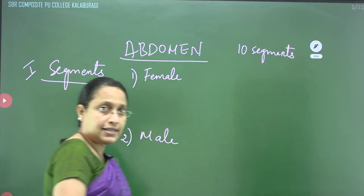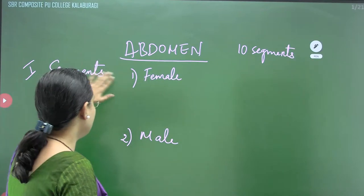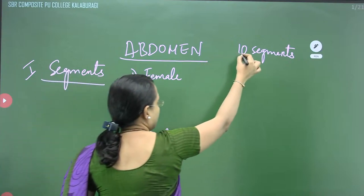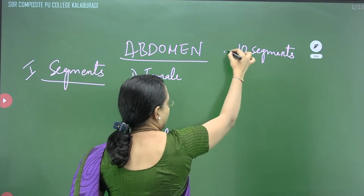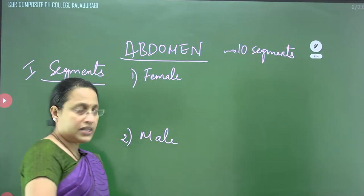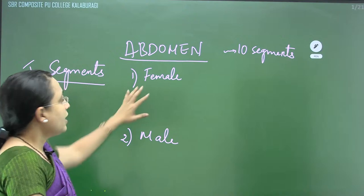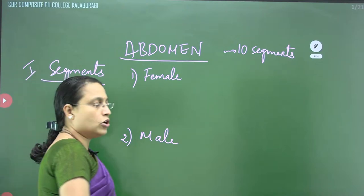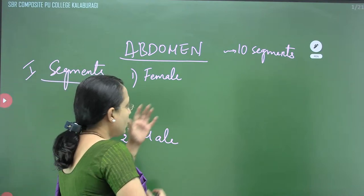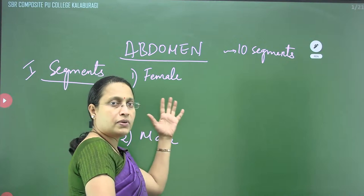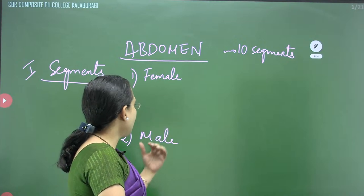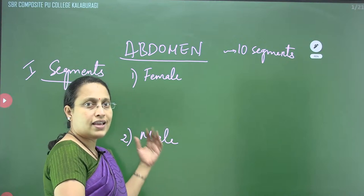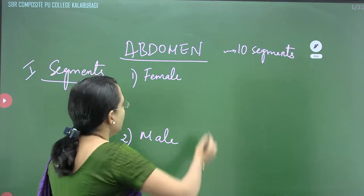There are a total of 10 segments present both in male and female — those are the abdominal segments. In the female, 10 segments; in the male, also 10 segments. Now, what will be the difference between the abdominal segments in the male and female? Certain differences will become clear as I explain.